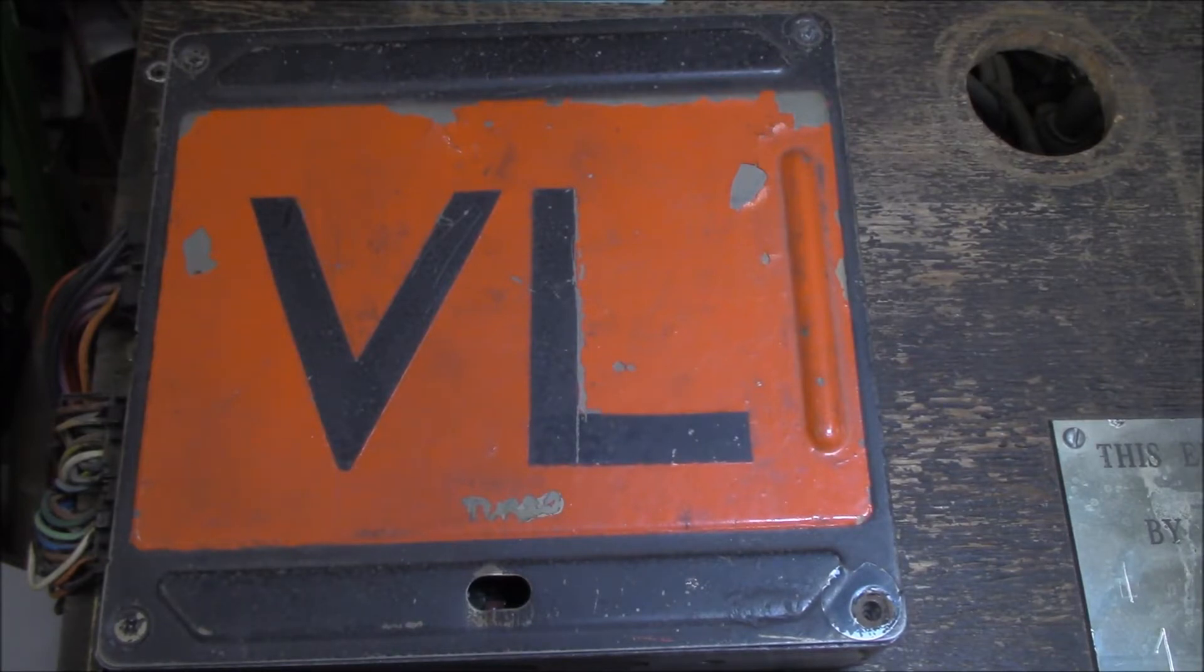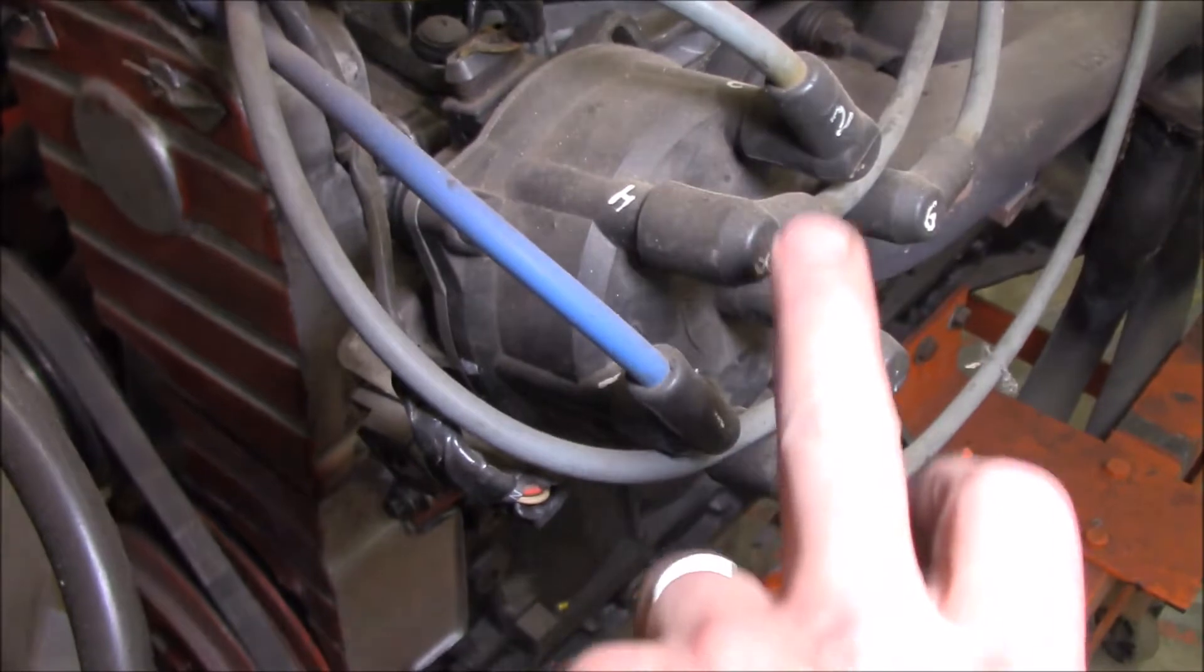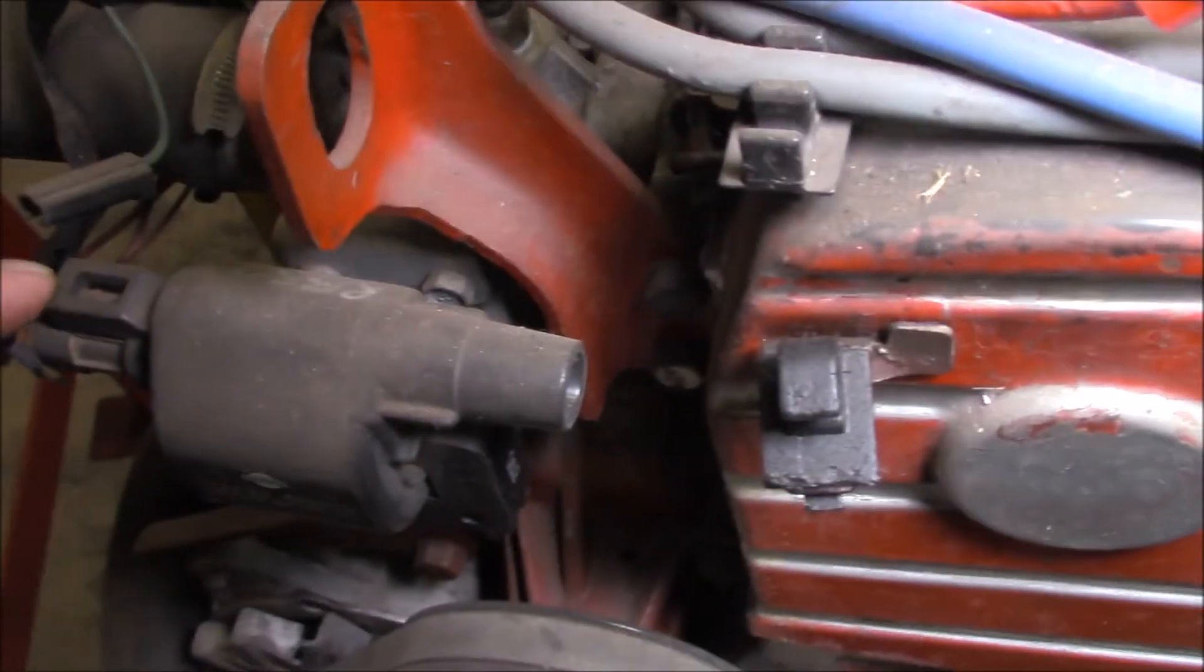The distributor on this particular motor uses an optic triggering system together with an ignition module. This one uses an optic pickup inside the distributor here together with an ignition module mounted on the side which goes over to this ignition coil over the other side of the engine.